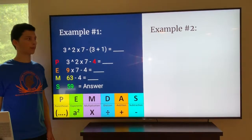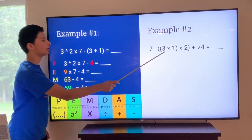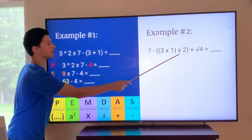Here's another example. Let's say we had seven minus, in parentheses, three times one, times two, plus the square root of four.